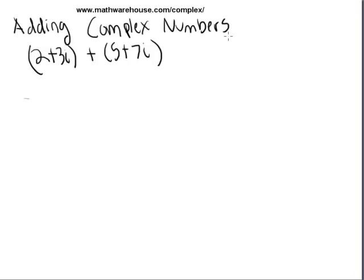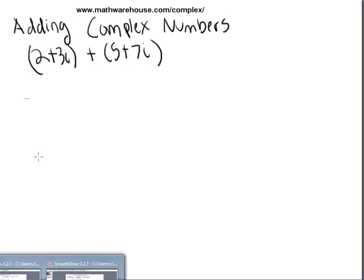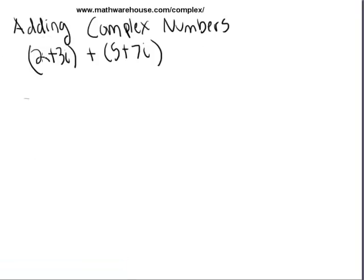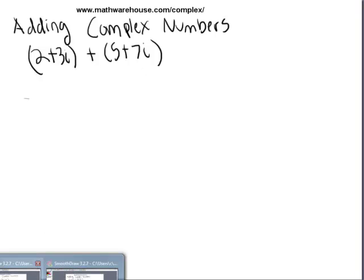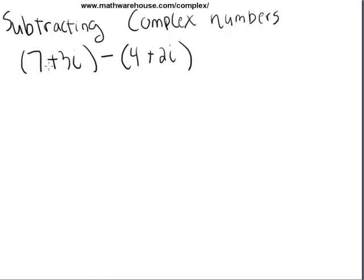This tutorial is going to be broken down into two parts. Part one will focus on adding complex numbers, like 2+3i plus 5+7i. After we've done that for a bit, we're going to work on subtracting complex numbers, 7+3i minus 4+2i.